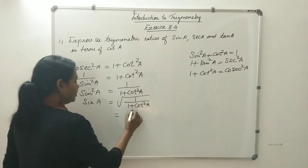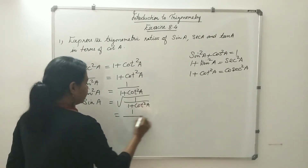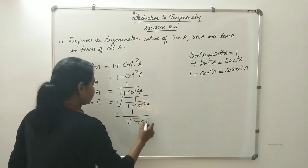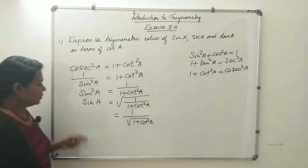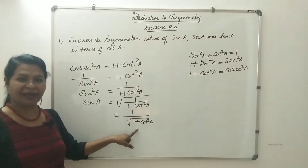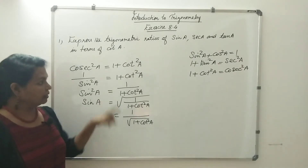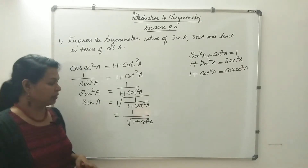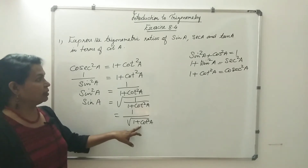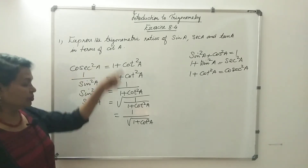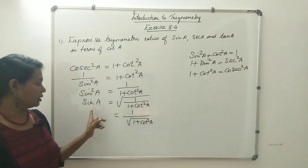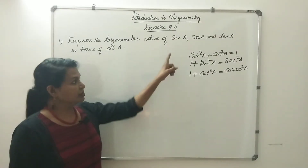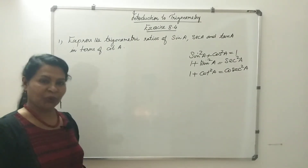The square root of 1 is 1. So sinA equals 1 divided by the square root of (1 plus cot²A). That is sinA expressed in terms of cotA. You can do it in any method using sin and cot.